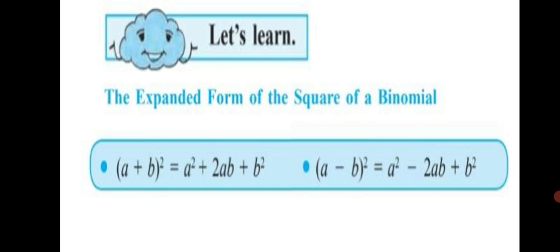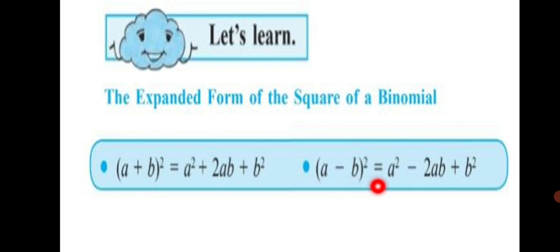Let us revise: a plus b, the whole square, equals a squared plus 2ab plus b squared; and a minus b, the whole square, equals a squared minus 2ab plus b squared. Kindly write down these two important formulas before you begin Practice Set 50.